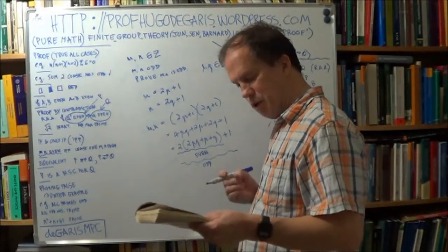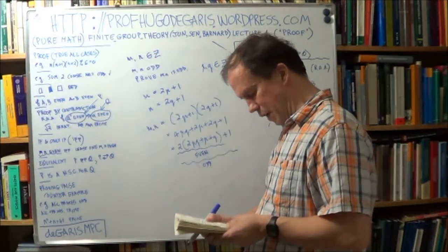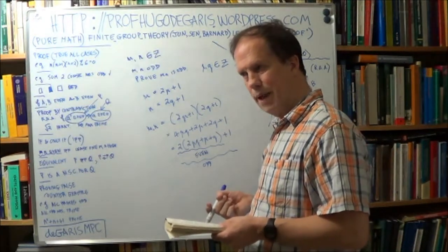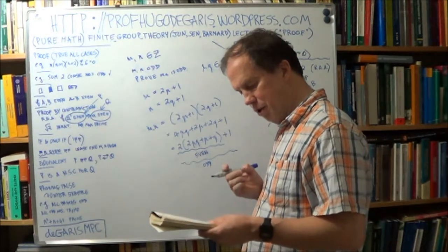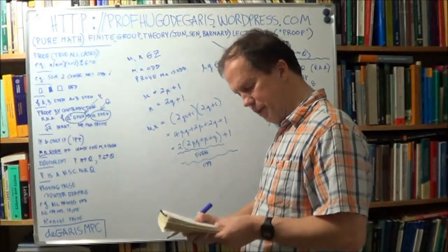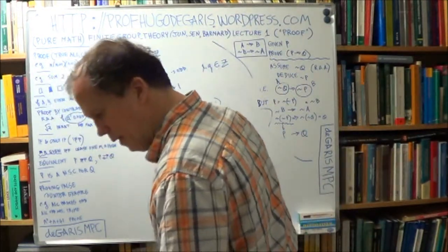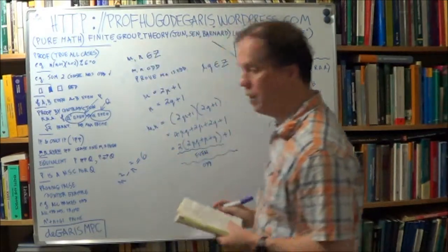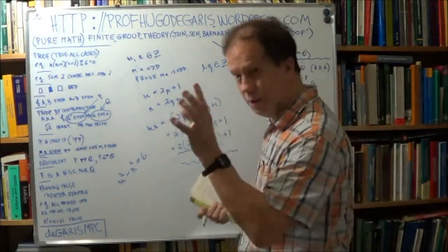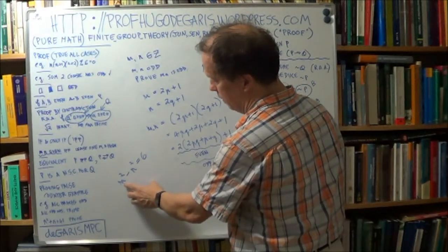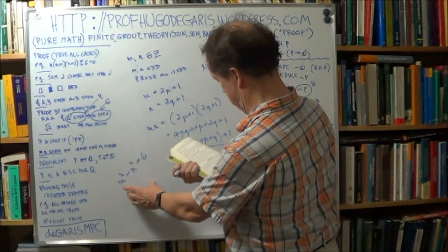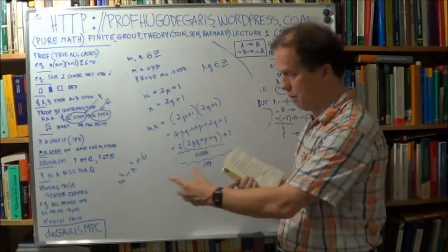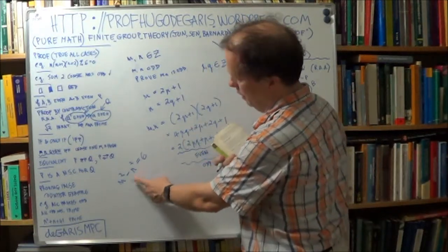Now this next one, this is question 2 in the exercises of the textbook. Use proof by contradiction, in other words RAA, reductio ad absurdum, use proof by contradiction to show that it's not possible to find positive whole numbers m and n such that m squared minus n squared equals 6. You cannot find positive integers m and n so that m squared minus n squared is equal to 6.